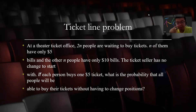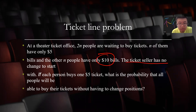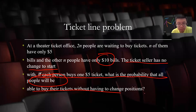Hey, what's up guys? Let's solve this interview problem. This problem is not so common, but it's an interesting mathematical question — the ticket line problem. So a theater ticket office: two N people are waiting to buy tickets. N of them have only five-dollar bills, and the other N people have only ten-dollar bills. The ticket seller has no change to start with. If each person buys one five-dollar ticket, what's the probability that all people were able to buy tickets without having to change position?